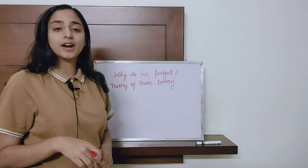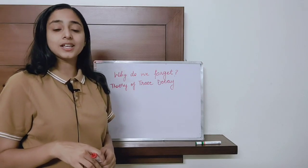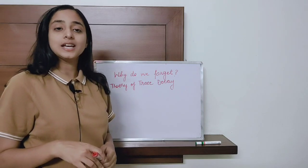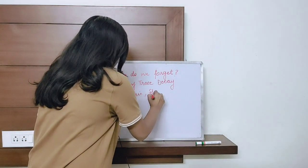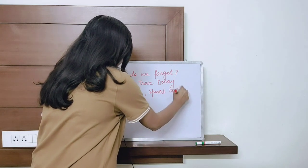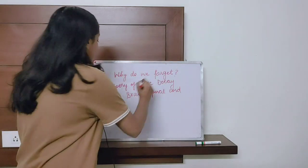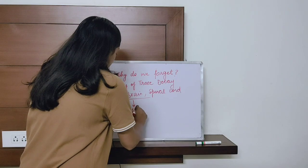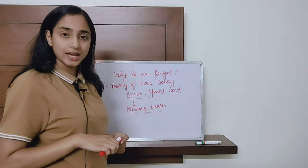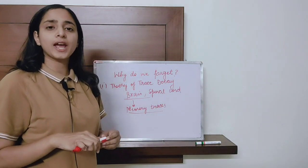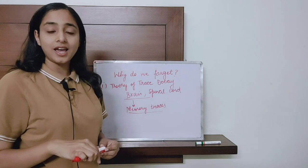The first theory of forgetting is known as the theory of trace decay. This theory says that whenever we try to memorize or learn something and store it in our memory, certain changes take place in our central nervous system — our brain and spinal cord. These changes are known as memory traces.